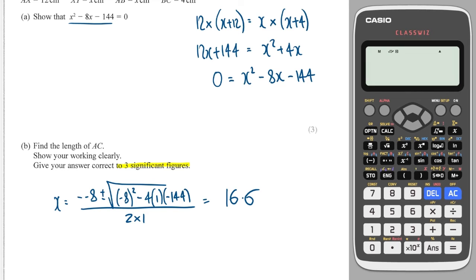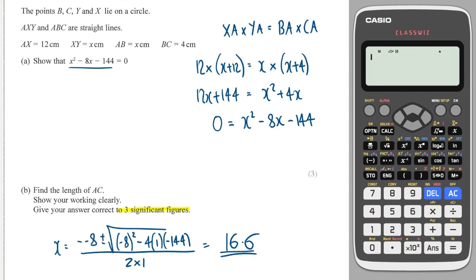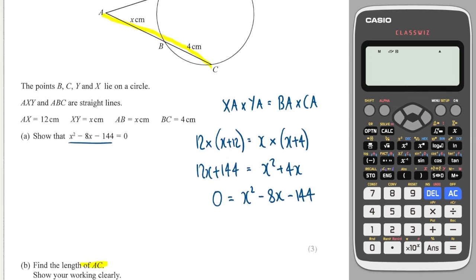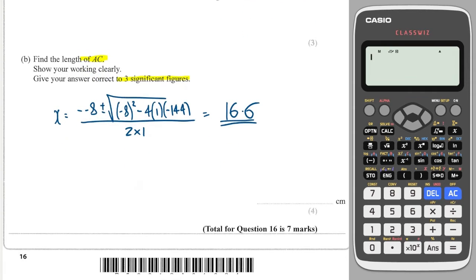Yeah, so the other one gives me a negative. So this is my correct answer for X. But the question does ask for AC, and AC is clearly X plus 4. So I'll write that AC is equal to 16.6 plus 4, which is 20.6.